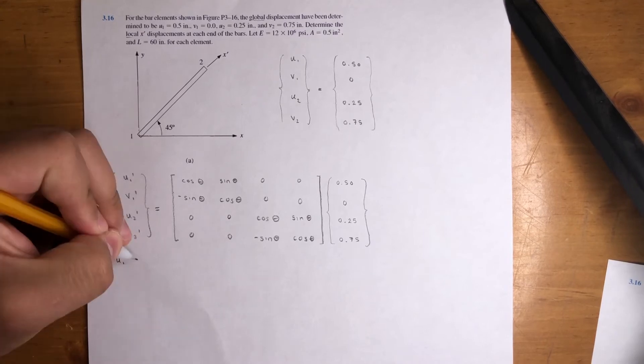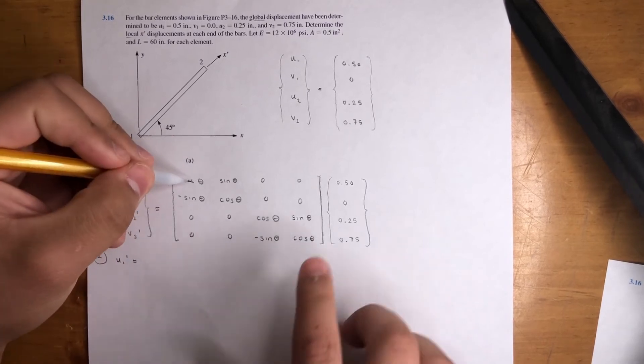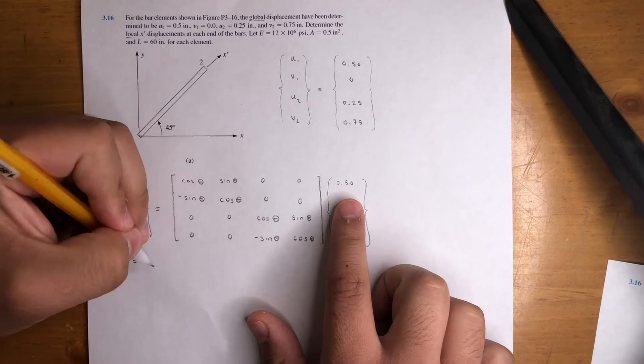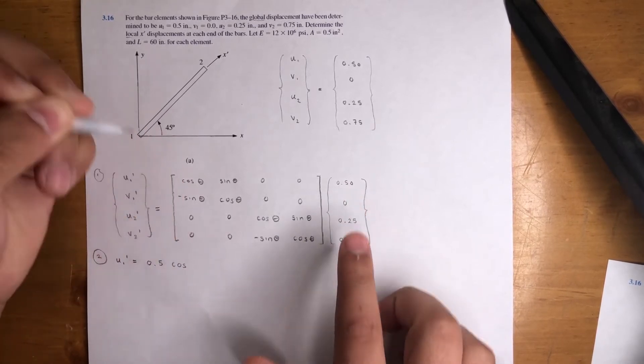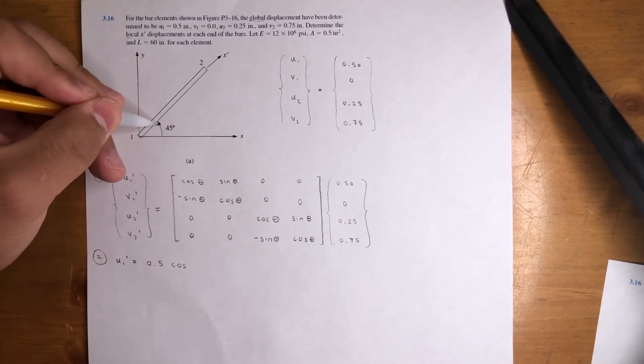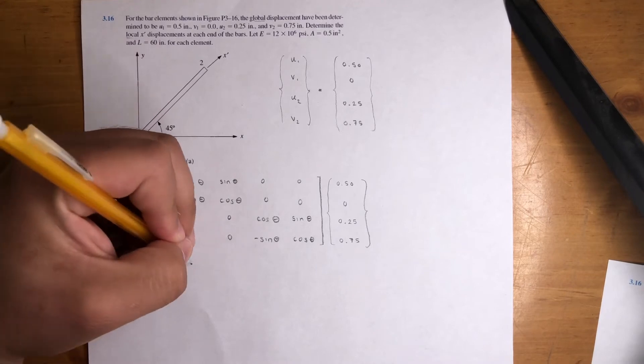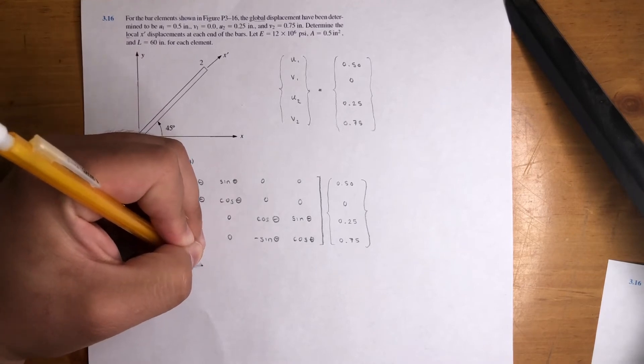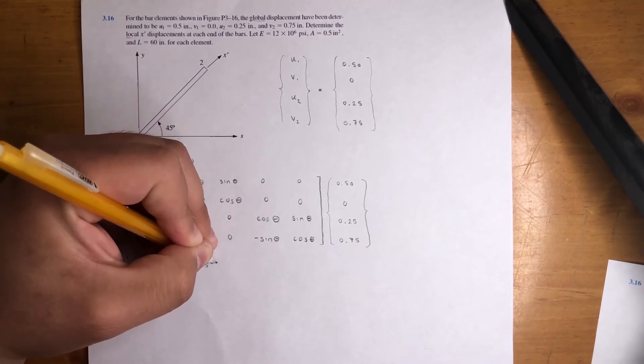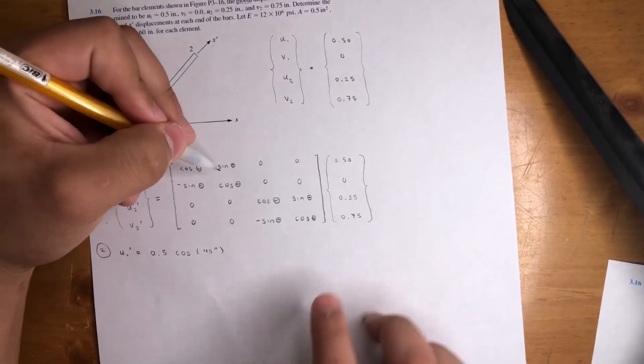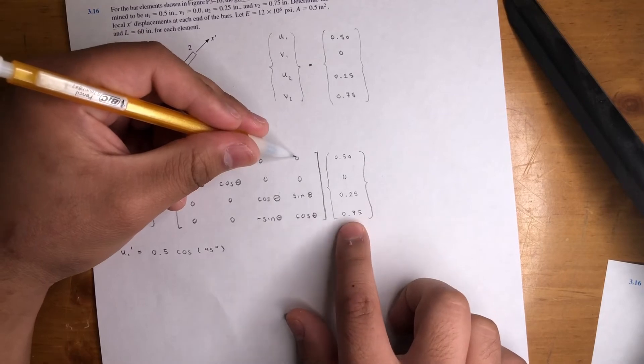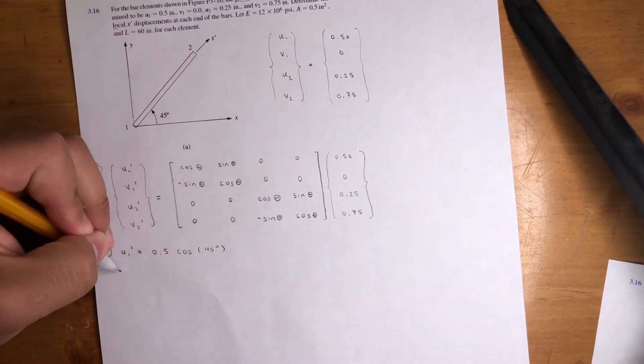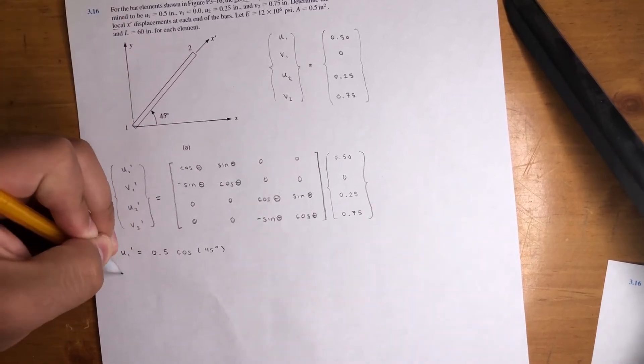So U1 prime is equal to, it's going to be cosine theta times 0.5. So that's going to be 0.5 cosine of theta, which is the angle with respect to that positive x-axis. In this case, it's 45. So 45 degrees and plus sine times 0 plus 0 times this number plus 0 times this number. So cool, that's the only term for that equation.